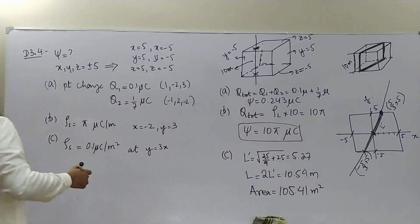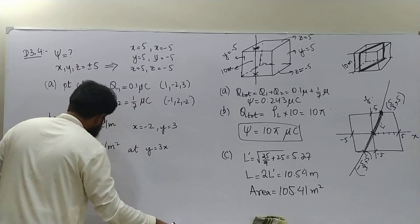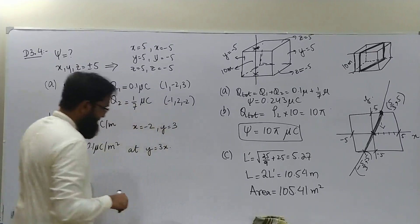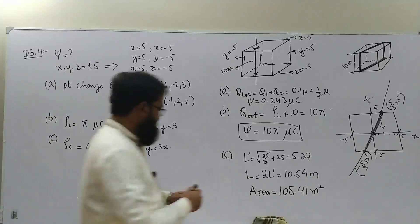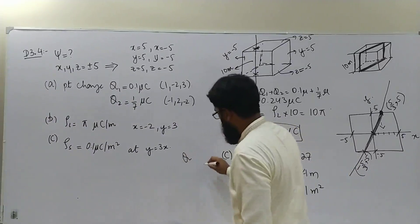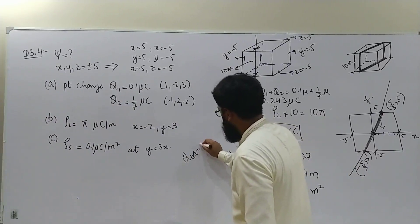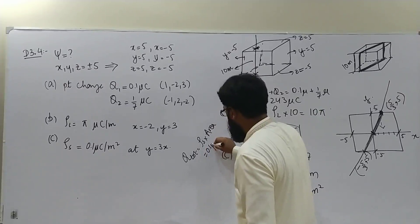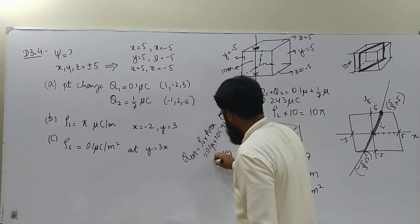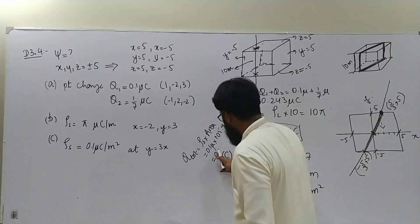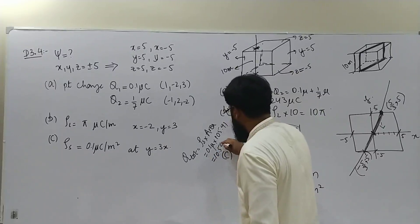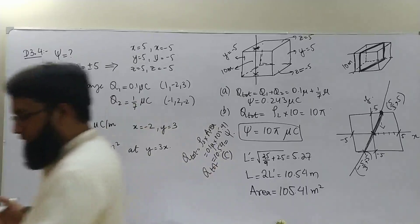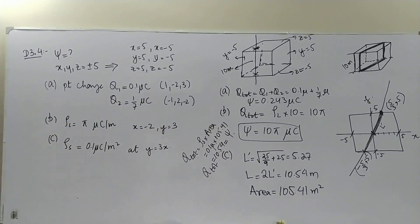The total charge enclosed is ρs × Area = 0.1 microcoulombs/m² × 105.41 m² = 10.54 microcoulombs. This equals the total flux leaving the box. So for part c, Ψ = 10.54 microcoulombs. This is how you solve drill 3.4.